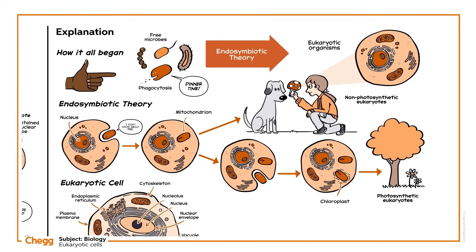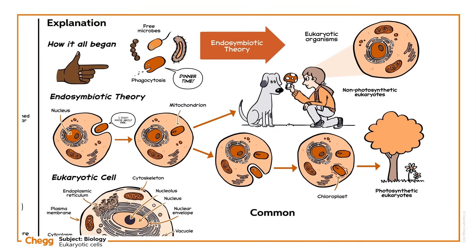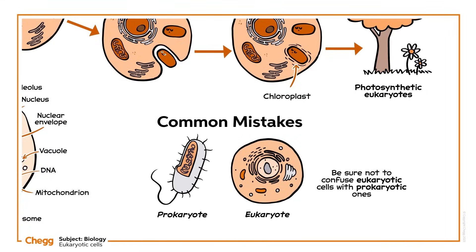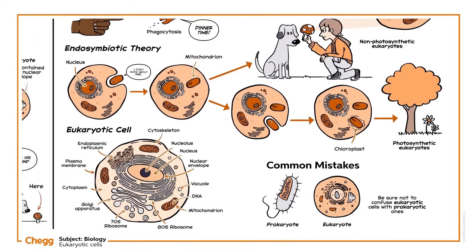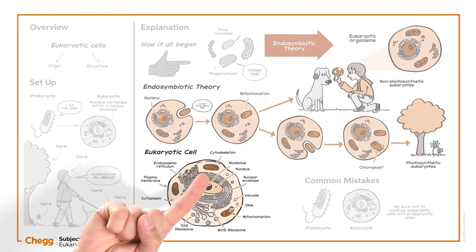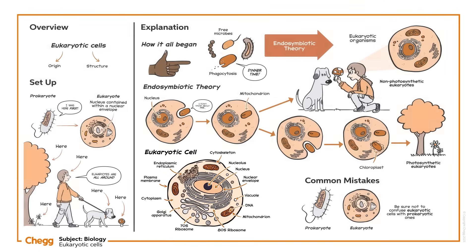Chloroplasts contain chlorophyll, a green pigment that plays a major role in photosynthesis. Be sure not to confuse eukaryotic cells with prokaryotic ones. Although eukaryotic cells evolved from prokaryotic cells, they have distinct differences, including the presence of a compartmentalised nucleus and membrane-bound organelles. Today we've covered the endosymbiotic theory for the origin of eukaryotes and the structure of eukaryotic cells. Thanks for watching.